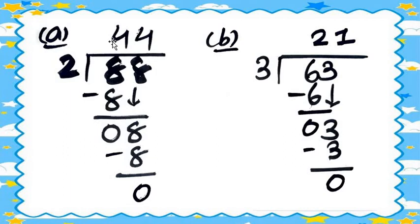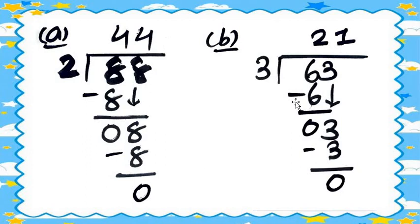Bringing down the 8: two fours are 8, so 8 minus 8 equals zero. The answer is 44. Now question 1b: 63 divided by 3. In the table of 3, 6 will come — three twos are 6. So 6 minus 6 equals zero, then we bring down 3. Three ones are 3, so 3 minus 3 equals zero. The quotient is 21.